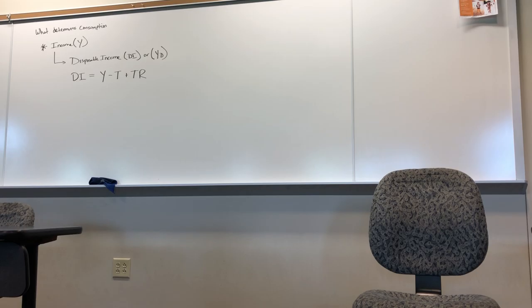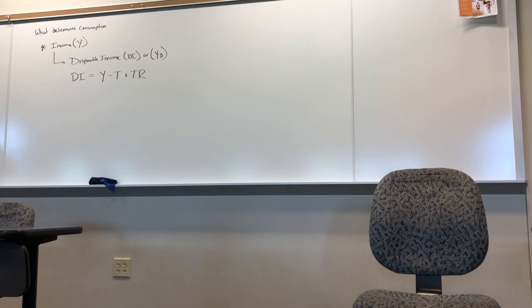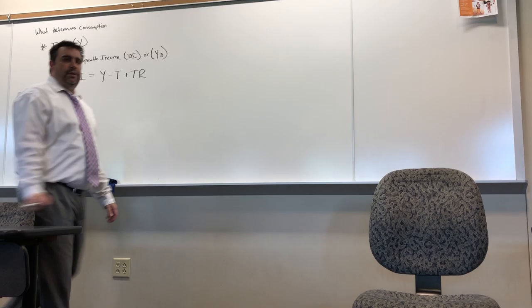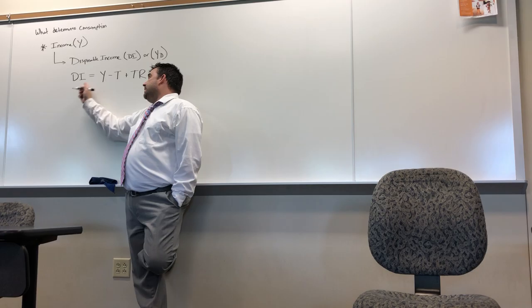Transfer payments were defined earlier in the semester — things like welfare, social security, and unemployment benefits — money taken out of one person's taxes and transferred to another consumer. We learned that when we did circular flows. The textbook writes YD equals Y minus T plus TR, which I find a little annoying, so I prefer DI equals Y minus T plus TR.